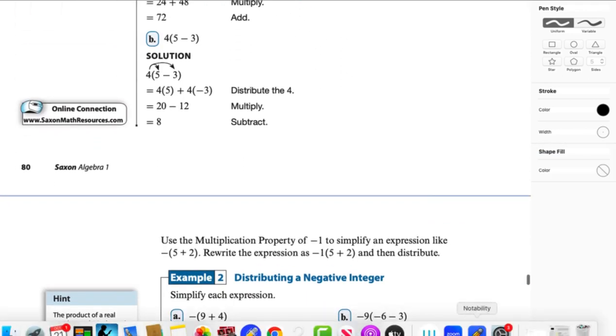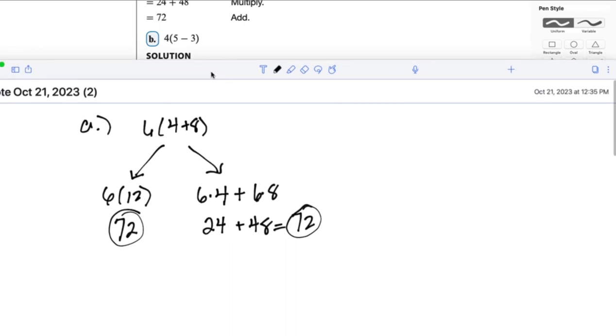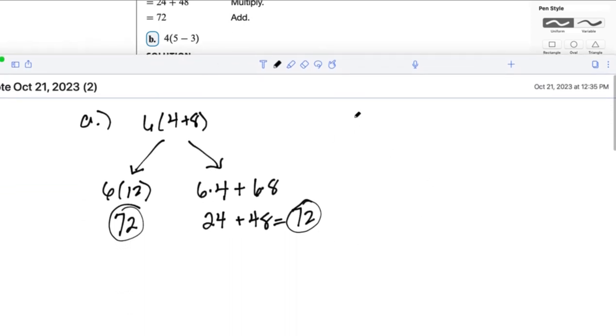Let's go ahead and take a look at this next one. So this next one is a subtraction. We're going to be distributing over subtraction. Part B, again, we're going to do it in two ways. If I have 4 times the quantity of 5 minus 3, I could either do it the way we do it, which is to simplify what's in the parentheses first. That gets 4 times 2, which brings me 8. Or I can use the distributive property, 4 times 5 minus 4 times 3. When I do this, I get 20 minus 12, which also equals 8.